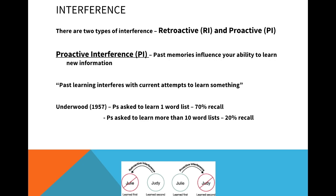The second type is proactive interference, where past memories influence your ability to learn new information. Using the same class example: maybe I've got a new class in September and I call one of my new students by the name of one of my old students — my past knowledge is having an effect on the new information. The worst case would be calling a new boyfriend or girlfriend by your ex's name. So now you can just blame psychology and say, sorry, it's my proactive interference.